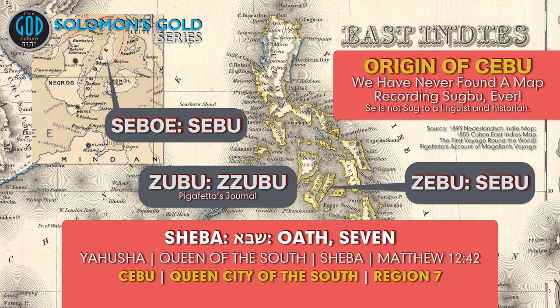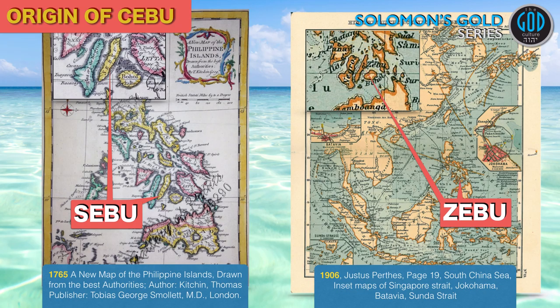But now this gets more intense. Here we have a map from 1765 that actually renders that island as Cebu, spelled S-E-B-U, and then one from even 1906 that still renders it with a Z, not a C. The C is fairly new in history — it was an addition. The older maps show it with an S or a Z. By changing that to a C, it looks like a completely foreign word. But when the S is there, this is Hebrew.